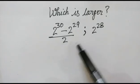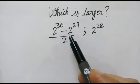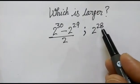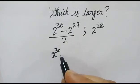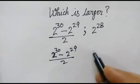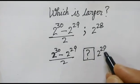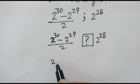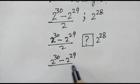Hi friends, in this problem we have to find out which number is larger. The first number is (2 to the power 30 minus 2 to the power 29) over 2, and the other number is 2 to the power 28. What is the relationship between these two numbers?